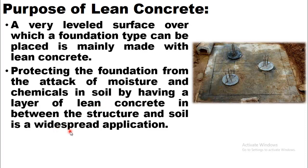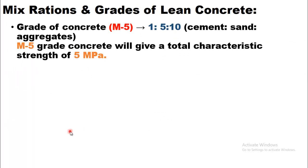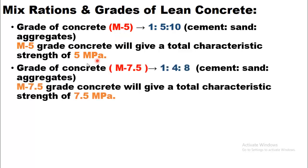Now, mix ratios and grades of lean concrete. Grade M5 has a ratio of 1:5:10 — 1 part cement, 5 parts sand, and 10 parts aggregate. As you can see, the amount of aggregate is much higher compared to cement, which is why it is called lean concrete. M5 grade concrete gives a characteristic strength of 5 MPa. The next grade used for lean concrete is M7.5, with a ratio of 1:4:8 — 1 part cement, 4 parts sand, and 8 parts coarse aggregate.